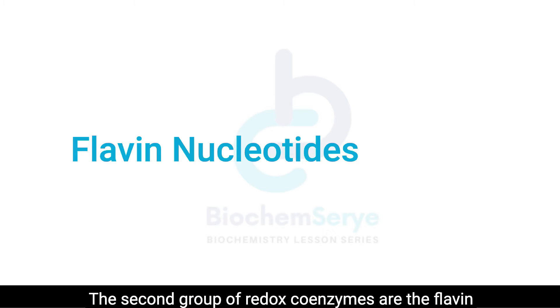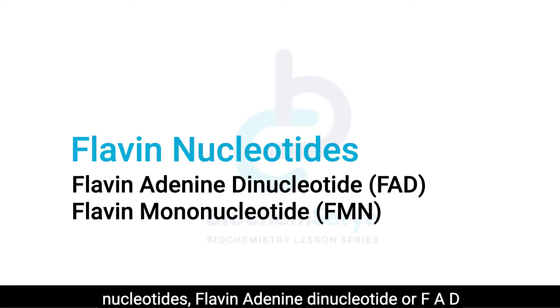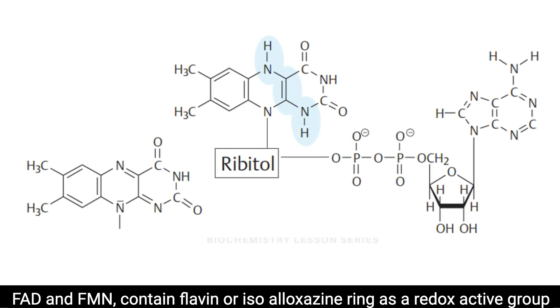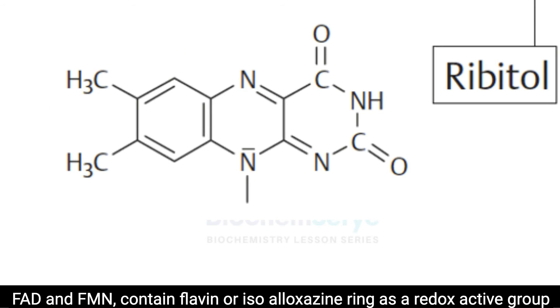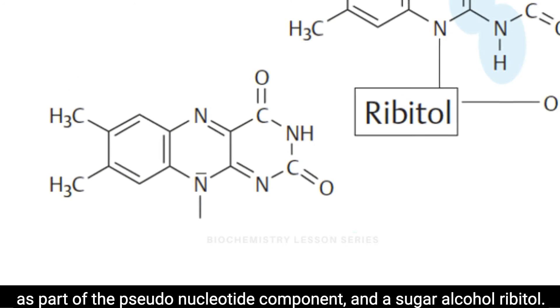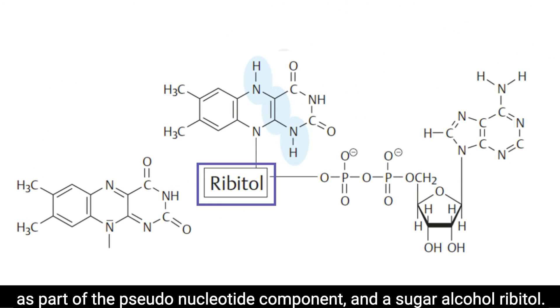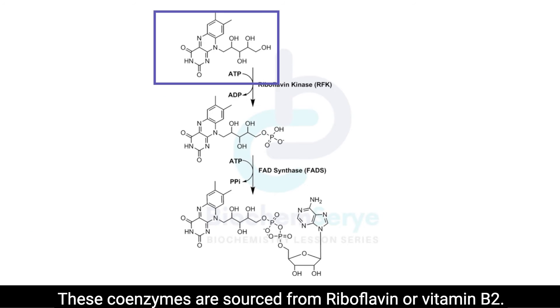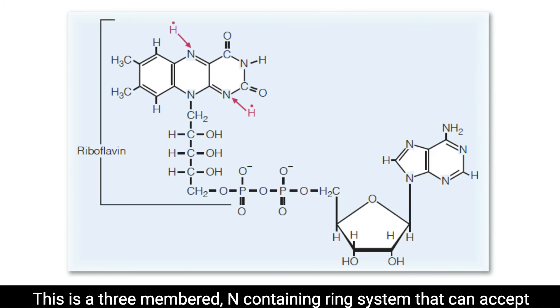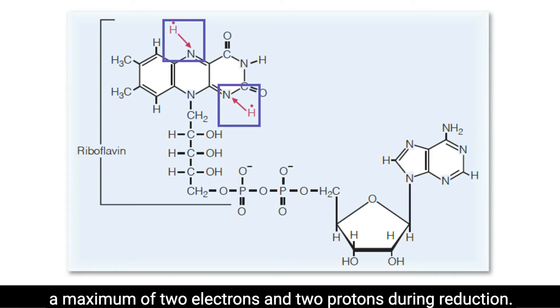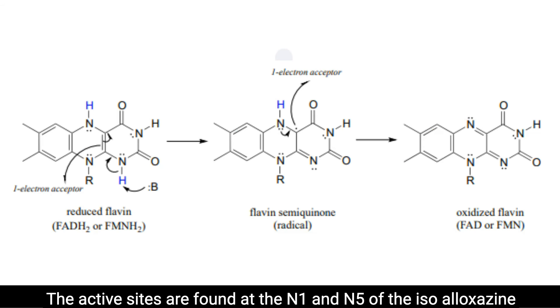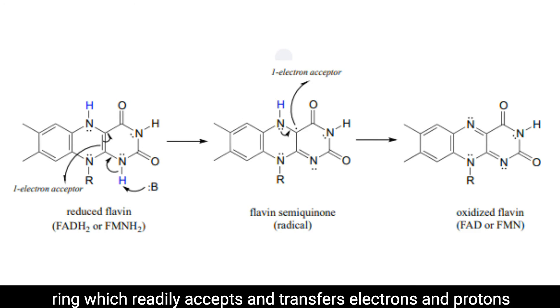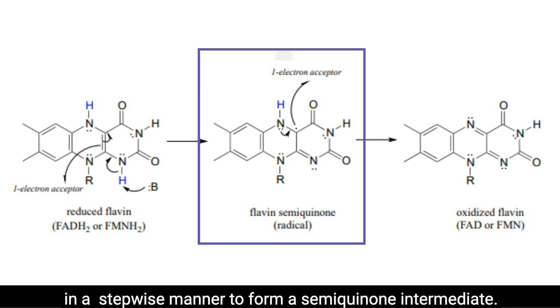The second group of redox coenzymes are the flavin nucleotides: flavin adenine dinucleotide or FAD, and flavin mononucleotide abbreviated as FMN. FAD and FMN contain flavin or isoalloxazine ring as a redox active group as part of the pseudonucleotide component and a sugar alcohol ribitol. These coenzymes are sourced from riboflavin or vitamin B2. This is a three-membered ring containing system that can accept a maximum of two electrons and two protons during reduction. The active sites are found at the N1 and N5 of the isoalloxazine ring which readily accepts and transfers electrons and protons in a stepwise manner to form a semiquinone intermediate.